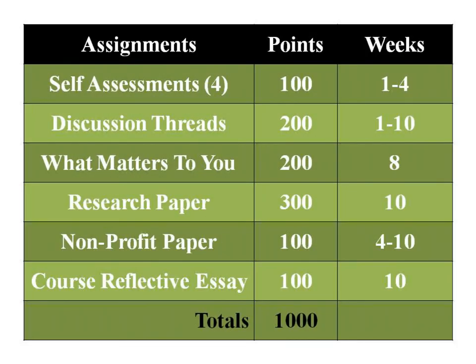Your assignment and point scale for this class for the next ten weeks: In the first week's thread, there's a listing for four self-assessments. In the Webliography, there's a list of sites — you may have done some self-assessments in previous classes, but you need to do four of them. Copy the results off the internet, put them all together in a Microsoft Word document in standard APA format, 12-point font, double-spaced, Times New Roman, and write a short essay on whether you agree with the assessments and what you intend to do about it. There are discussion threads throughout the ten weeks, 20 points a week. What Matters Now comes off the book What Matters Now — 200 points. You're going to do a research paper and a non-profit paper. And your standard course reflective essay for the standard 1,000 points.